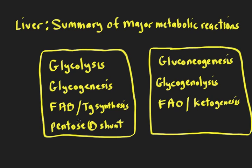The pentose phosphate shunt makes NADPH, and there really isn't an opposing reaction in this grouping, so that's sort of left blank. When one group is on, all reactions in that group are on; when that group is on, all the opposing reactions in the other group are turned off, and vice versa. That makes sense because we don't want opposite reactions occurring at the same time — you'd just go around in a circle.